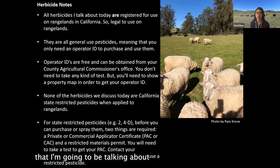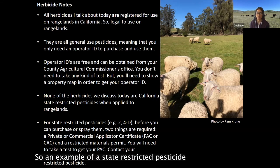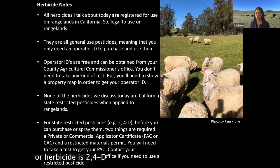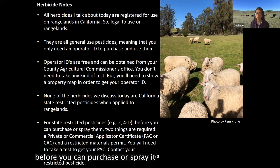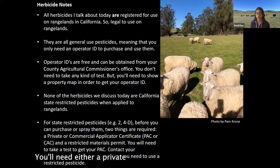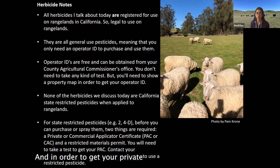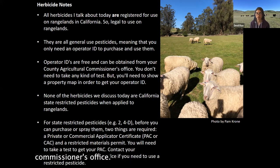None of the herbicides I'm going to talk about today are state restricted pesticides when applied to rangeland. An example of a state restricted herbicide is 2,4-D, which some people use on rangelands. For those kinds of herbicides, before you can purchase or spray them, you'll need a private or commercial applicator certificate and a restricted materials permit. In order to get your certificate you need to take a test through your agricultural commissioner's office.